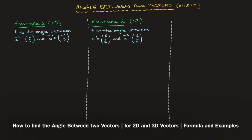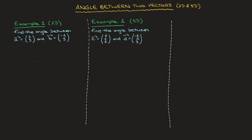We now learn how to calculate the angle between two vectors, and we're going to do so for both 2D and 3D vectors. In a minute, we'll work through the two examples that we see here. But first, let's see the formula.